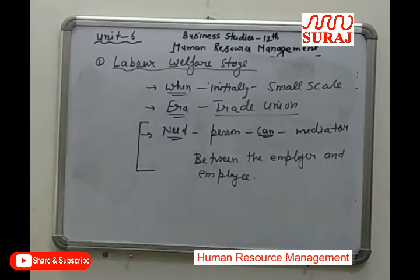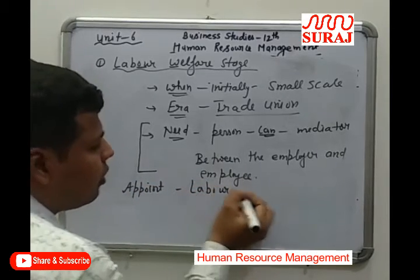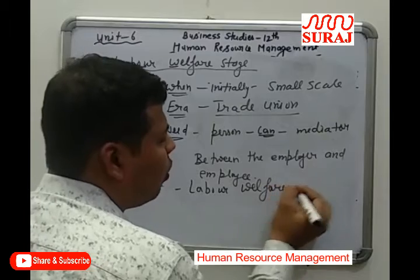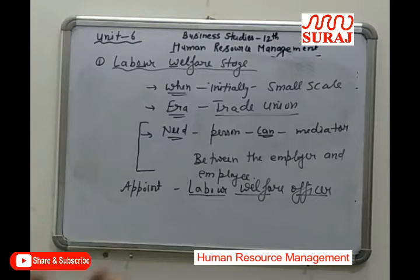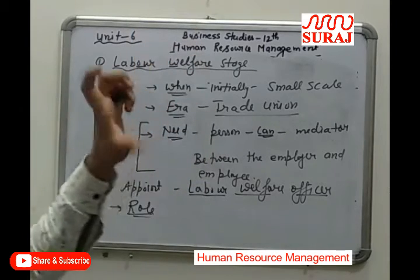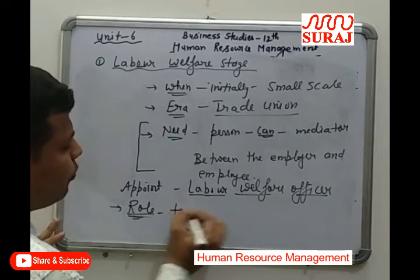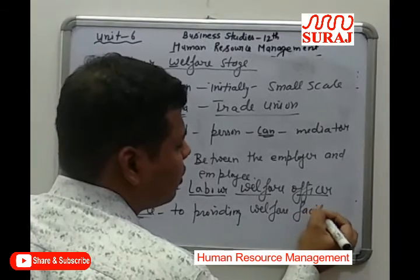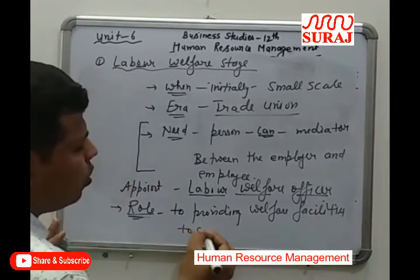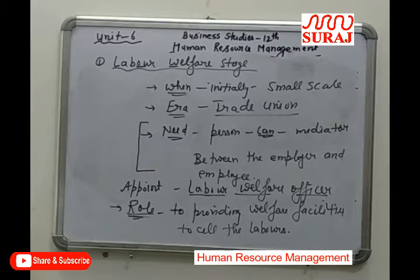We appoint a particular person known as the labor welfare officer. The role of the labor welfare officer in this first stage of evolution is to provide welfare facilities to all the labor and workers in the organization, acting as a mediator between the employer and employee.